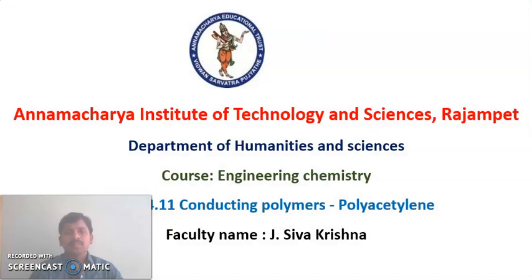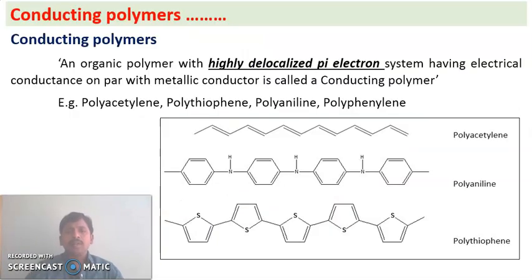Welcome to the session. In this video I am going to talk about conducting polymers and polyacetylene. Generally, metals are conductors — they conduct electricity by making use of free valency electrons. Valency electrons are free in metals, so they keep flowing, and in this way metals conduct electricity.